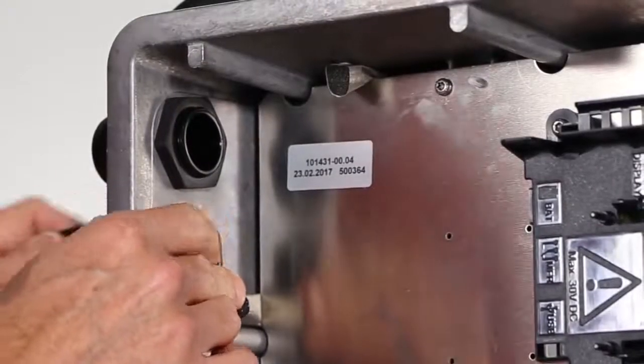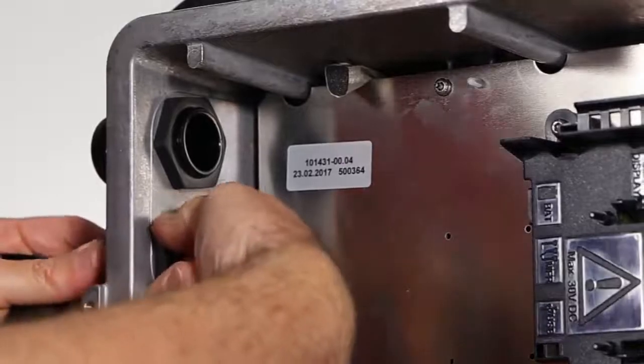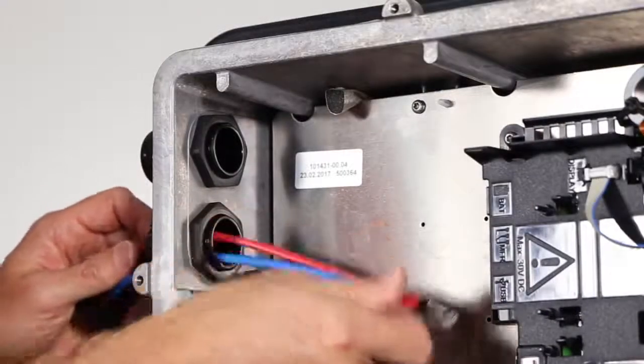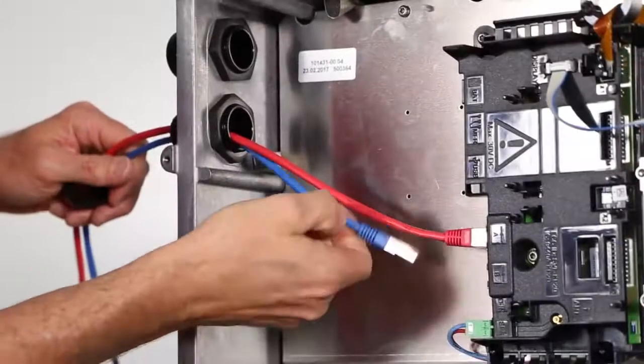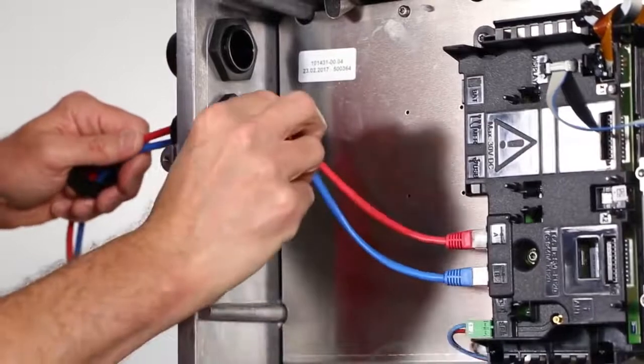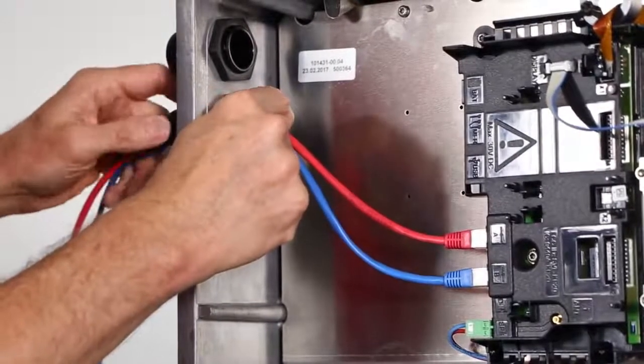For the communications, we bring the ethernet cable through one of the one inch openings and connect it to one of the RJ45 ports on the communications board. Multiple inverter communication boards can be daisy chained together using the second RJ45 port. When daisy chaining, the ethernet cables can be up to 100 meters in length.